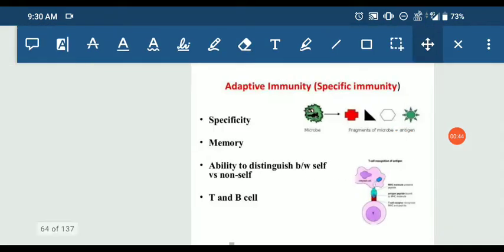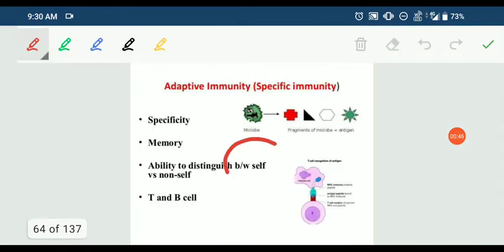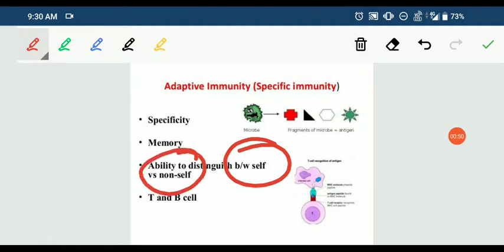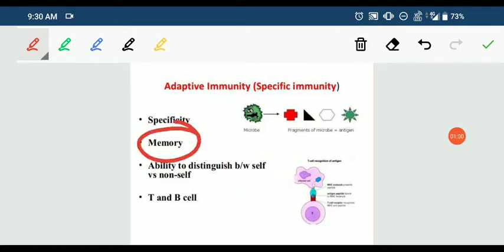Specificity means that our acquired immunity can distinguish between self and non-self cells. It can recognize our body's cells and distinguish them from foreign cells and molecules.